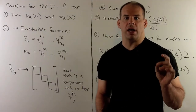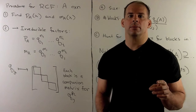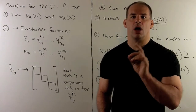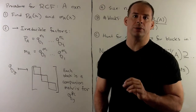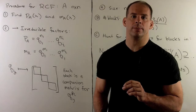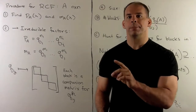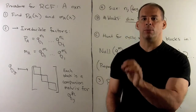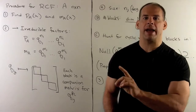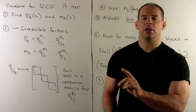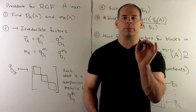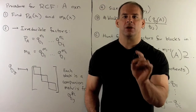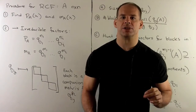One drawback to rational canonical form is that there are two formulations depending on the source you use. We're going to look at examples where I go from one formulation to the other and back. The information will be the same in each formulation; it will just reflect different properties.